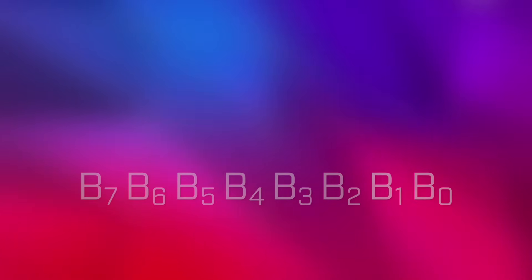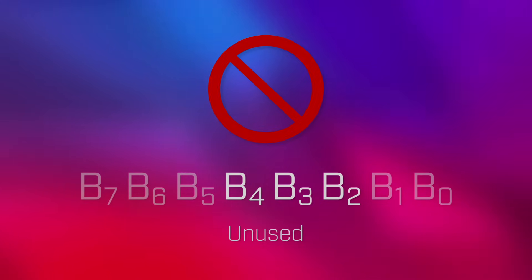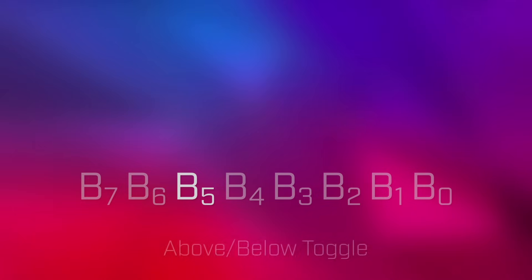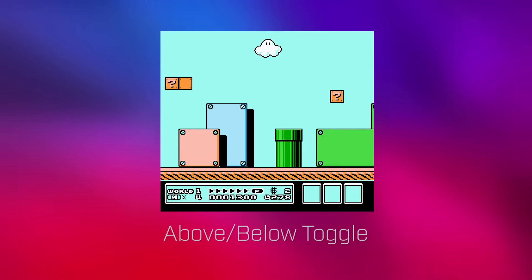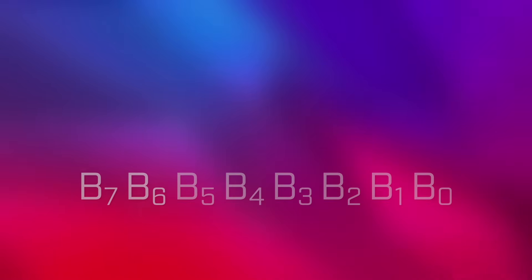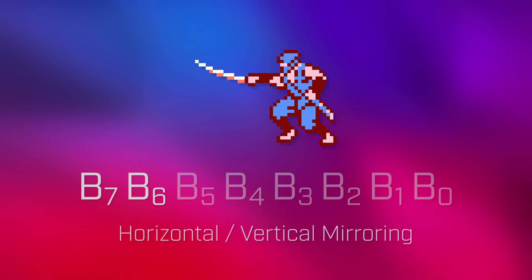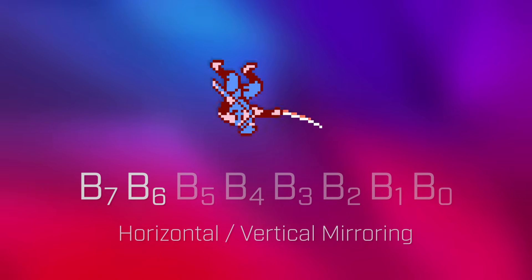Bits 0 and 1 are used to select one of the foreground palettes for the sprite. The next three bits — 2 through 4 — are unused and ignored by the PPU. Bit 5 controls whether to render the sprite above or below the background: if set to 0, the sprite renders on top of the background; if set to 1, it renders behind the background. Bits 6 and 7 control whether to flip the sprite horizontally or vertically, respectively. If the control bit contains a 0, the sprite is not flipped; if it contains a 1, then it is.